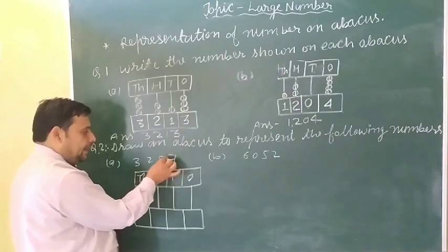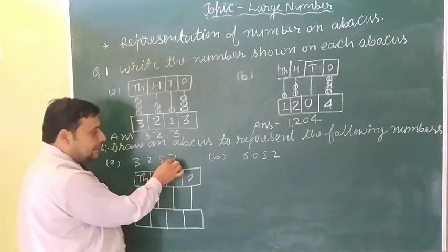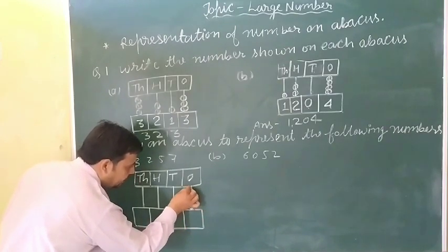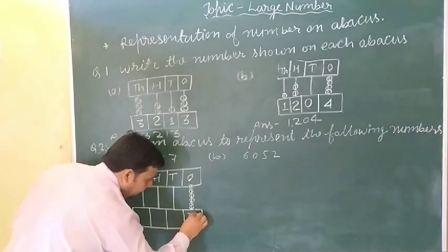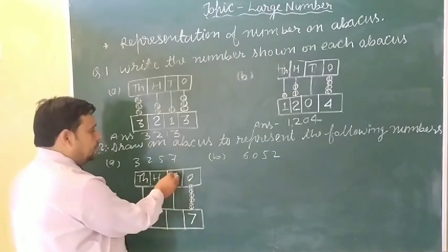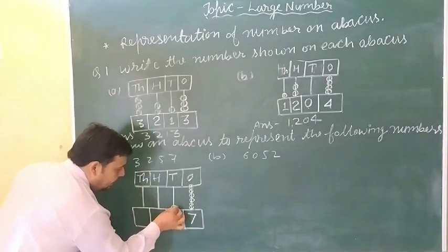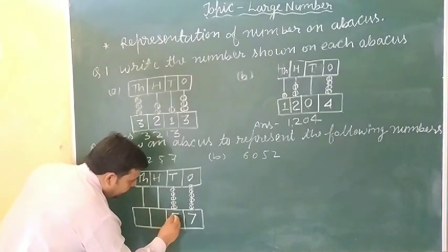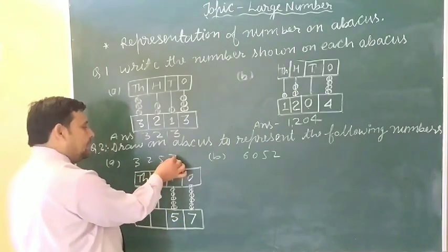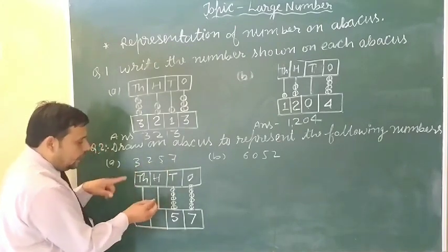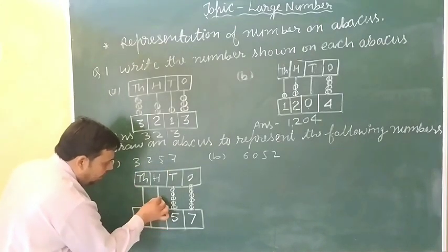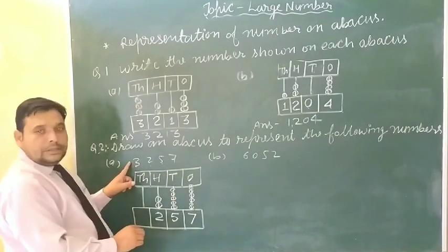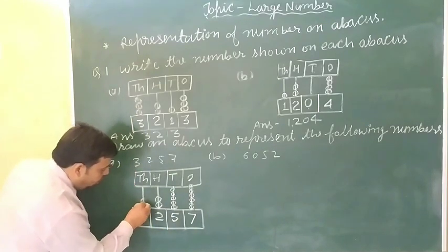Ones place par kitna hai? Seven — toh yahan par seven balls: one, two, three, four, five, six, seven. Tens place par kitna hai? Five — toh one, two, three, four, five. Hundreds place par kitna hai? Two — toh one aur two. Thousands place par? Three — one, two, three. This is my answer.